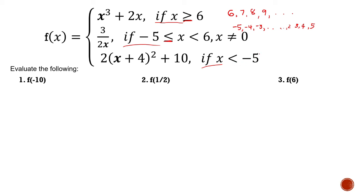x less than negative 5. What are the numbers less than negative 5? If this is our number line, what are the numbers less than negative 5? Of course, negative 6, negative 7, and so on. And of course, negative 10 belongs there. Since negative 10 is included in the third interval, we are going to use the third piece. So we substitute here. f(-10) = 2, replace all x with negative 10: (-10 + 4)² + 10.